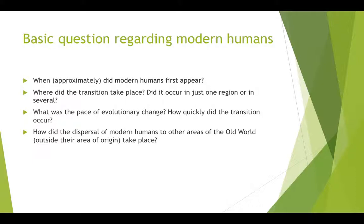Some of the basic questions we have regarding the appearance of modern humans — also designated Homo sapiens sapiens, or abbreviated in the literature as AMH, meaning anatomically modern human — include: when they first appeared in the fossil record, where this transition took place (was it one area or several?), what was the pace of their evolutionary change, how quickly the transition from multiple hominin species to only AMHs occurred, and how the dispersal of modern humans to other areas of the Old World took place.